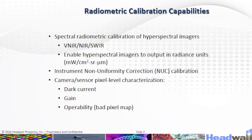Instrument non-uniformity corrections, known as NUC calibration, are performed at the camera sensor pixel level, with characterization of dark current gain and operability.